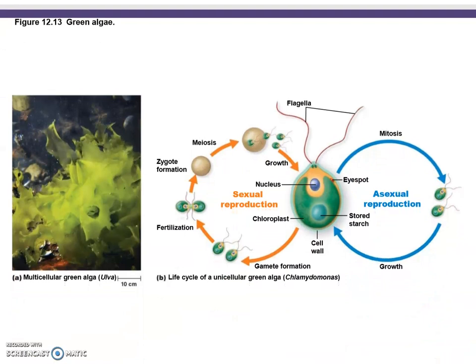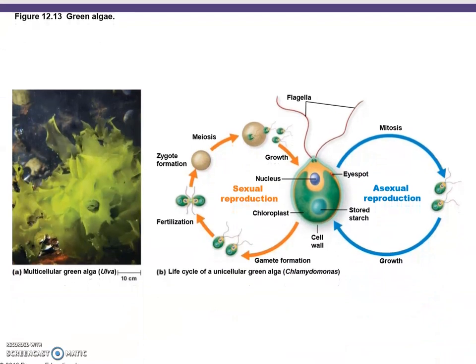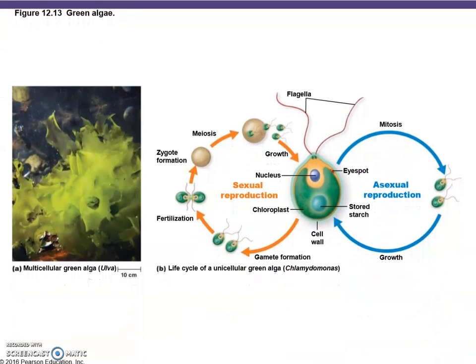Green algae can store starch and are thought to be the ancestors of our terrestrial plants. Looking at the life cycle, asexual reproduction is simply dividing by mitosis — two algae grow and divide again and again.